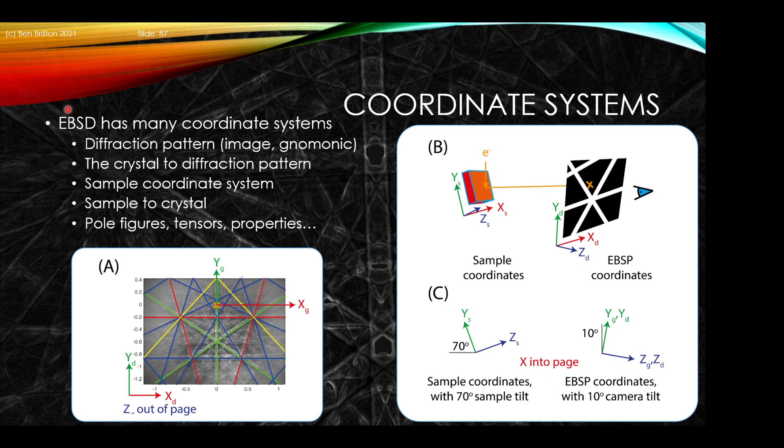The EBSD experiment has many coordinate systems. There are coordinate systems within the diffraction pattern, specifically two frames of reference: an image coordinate system describing how the pixels are in the image, and the Gnomonic frame of reference, which puts zero zero at the source point position and says the detector plane is at a distance one. There's also the crystal to diffraction pattern coordinate system, a sample coordinate system, a sample to crystal coordinate system, and representations with regards to pole figures, tensors, and properties.